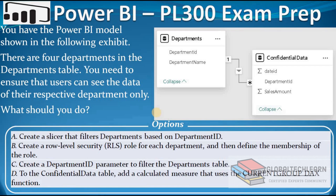You have the Power BI model shown in the following exhibit. There are four departments in the department table. You need to ensure that users can see the data of their respective department only. We can see we have two tables. The first is Departments, which contains Department ID and Department Name. In the second table, we have Confidential Data with sales-related information along with the Department ID.